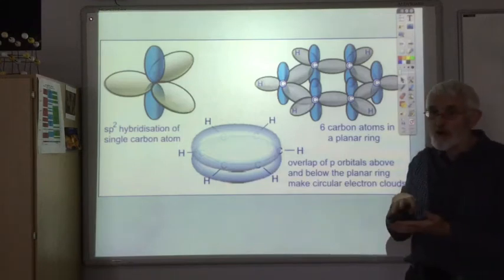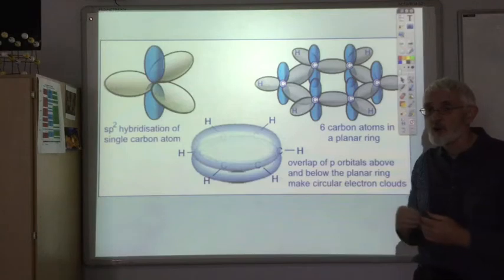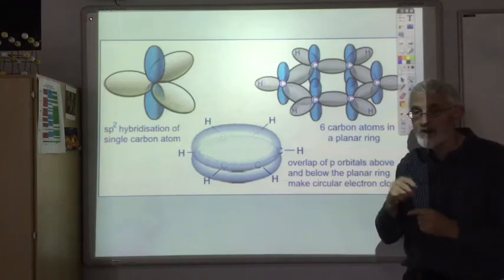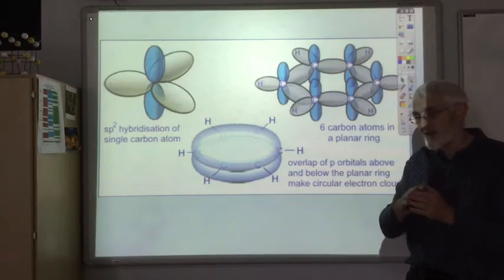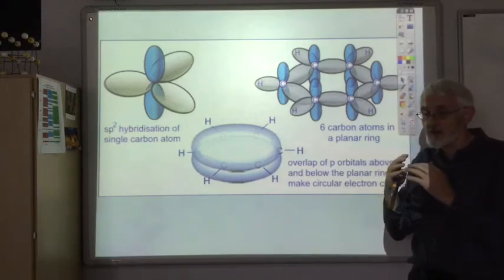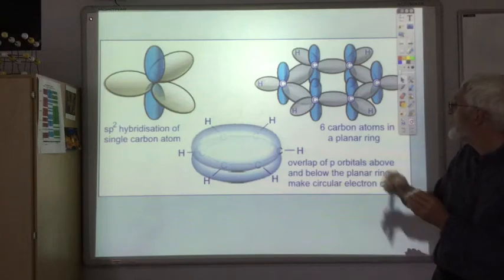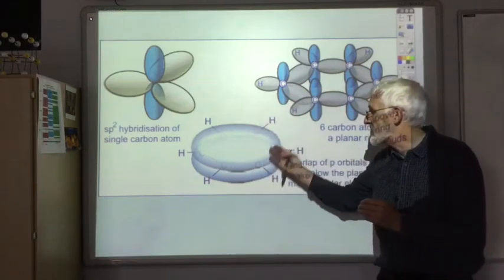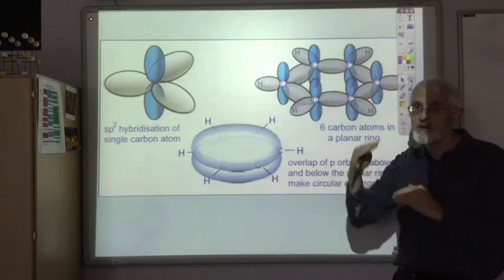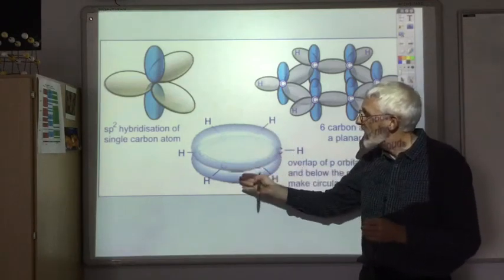You've got an electron cloud where all the p orbitals overlap together. We saw a similar thing in large conjugated systems and coloured organic substances with alternating single and double bonds. You could get this large area of electron delocalisation which brought down the homo-lumo gap and allowed the substance to absorb visible radiation and be coloured. This is a relatively small conjugated system, so it's not enough to bring that homo-lumo gap down into the visible region. Benzene is a colourless liquid, but you do get this electron delocalisation above and below the ring.